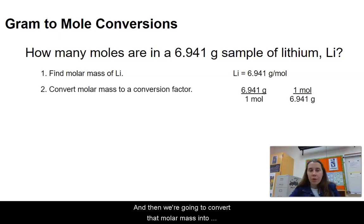Then we're going to convert that molar mass into a conversion factor. The molar mass means that's how many grams are in one mole. So we could write that as 6.941 grams in one mole, or we could write it as one mole is 6.941 grams, as they're both shown right here.